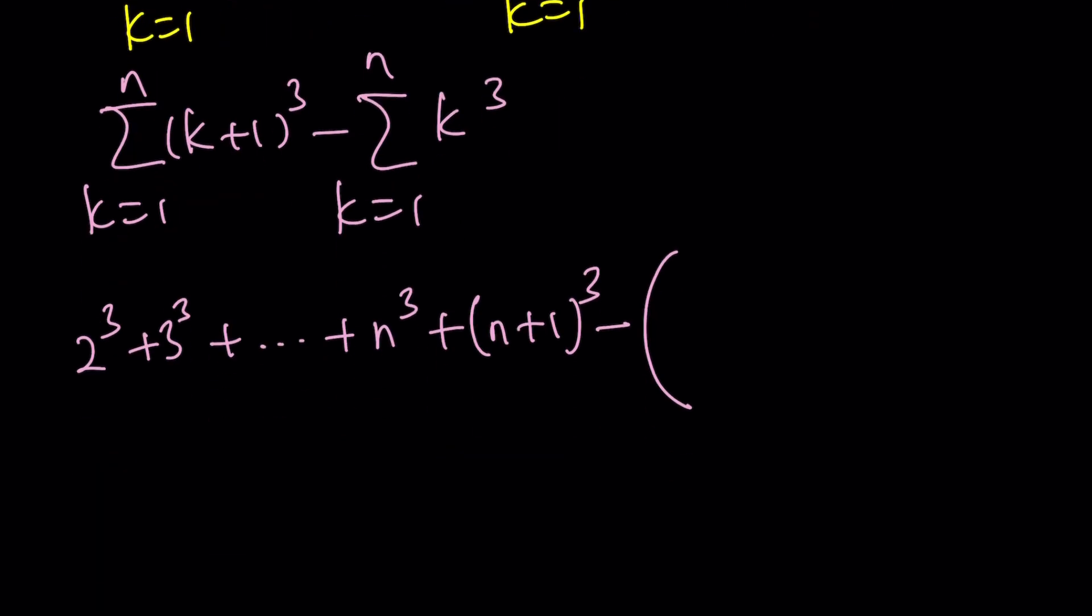Now k plus 1 cubed, k equals 1 through n. So that means 1 plus 1 cubed, which is 2 cubed, plus 3 cubed, plus dot dot dot all the way up to n plus 1 cubed. Of course I have n cubed before n plus 1 cubed, so let me write that too. So you kind of get the pattern. And then from that, I'm supposed to subtract the sum of cubes, which is fairly easy: 1 cubed, 2 cubed, 3 cubed, and so on and so forth, n cubed.